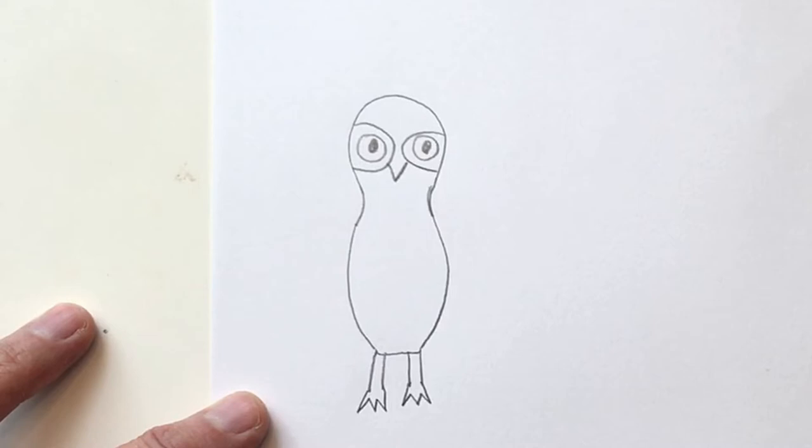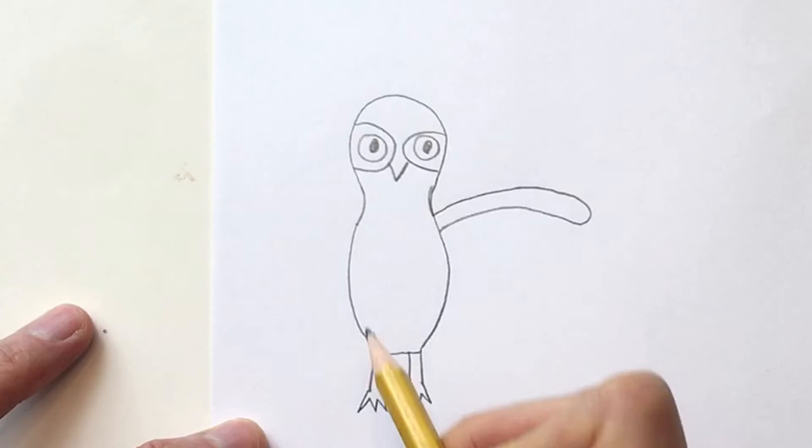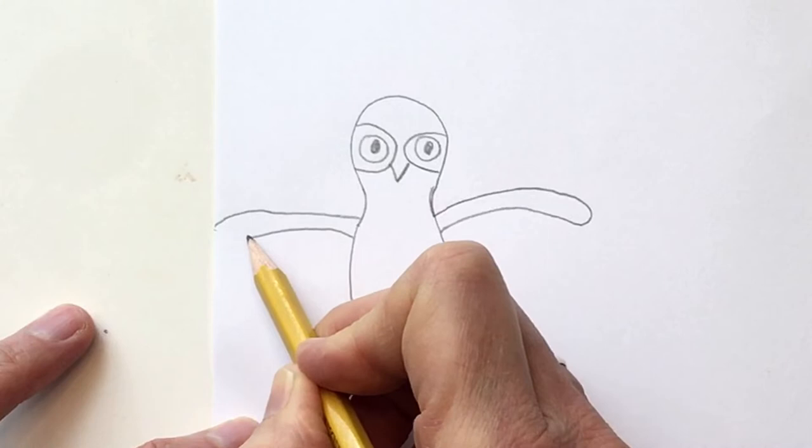Now let's make the beginnings of our wings. We are going to arch out, make a loop, and arch back in. On our other side we are going to arch out, make a loop, and arch back in.